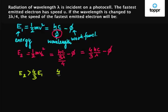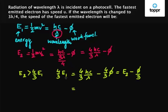So 4/3 E₁ equals 4/3 hc/λ minus 4/3 φ, which is equal to E₂ minus φ/3. So we have 4/3 E₁ equals E₂ minus φ/3.